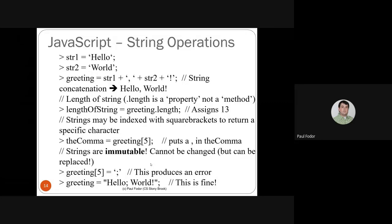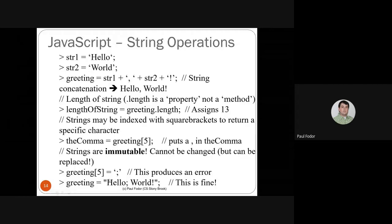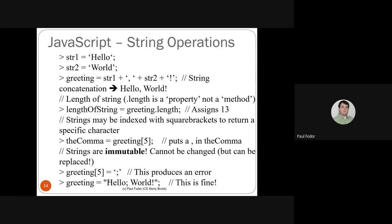Strings are immutable — a standard property of languages used for multi-threaded operations. Once created they cannot be changed, but they can be replaced. You cannot use an index expression to assign a different character to a specific position of a string — for example, 'greeting[5] = ";";' will produce an error. However, you can assign the reference to a new string like 'greeting = "hello;world!"' — this is totally fine. This is similar behavior to Java, where you can get a character at an index but cannot assign a different character at that index.